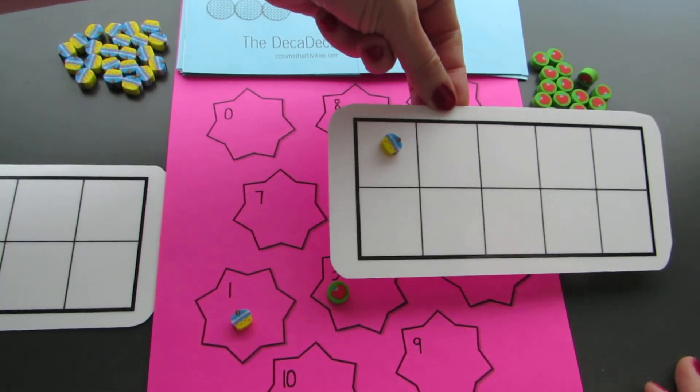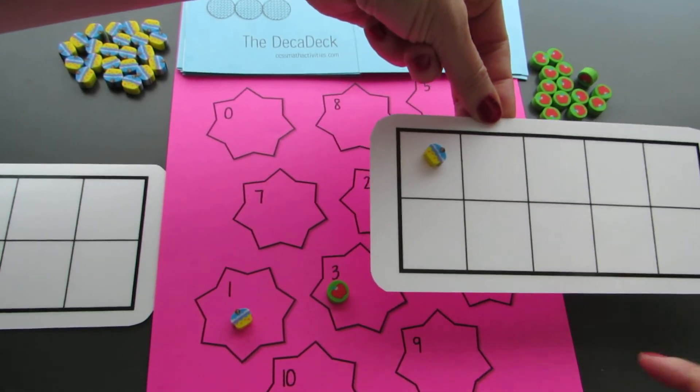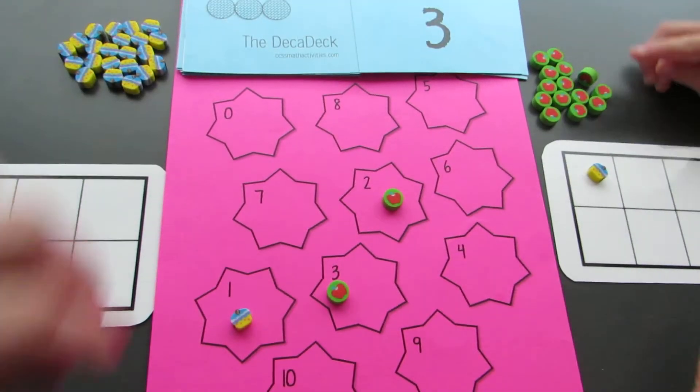How many do you have, James? One. How many more do you need to win the game? Nine. Nine more. One plus nine is ten.